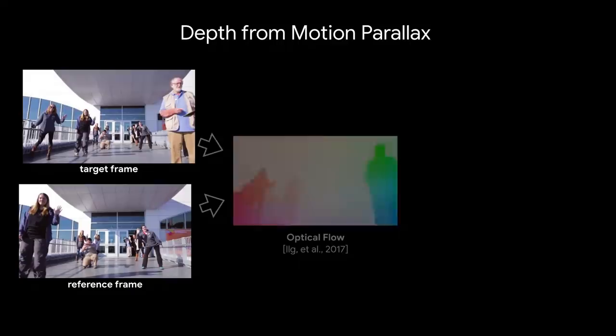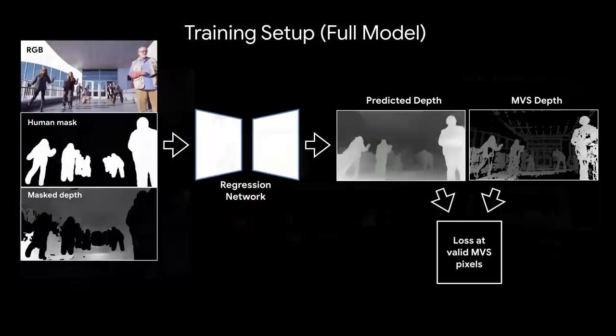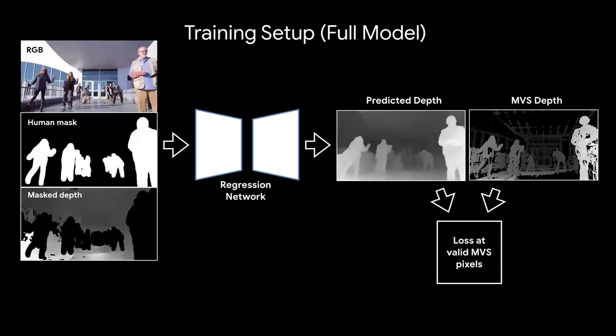The input to the network must handle both cases. The additional input is depth computed from motion parallax. We compute optical flow between the target and a reference frame, then translate the flow into depth using the SfM camera poses. At inference, the depth computed from moving people is inaccurate, so we remove humans using a segmentation mask. The full model takes as input the RGB frame, the human segmentation mask, and the masked depth from parallax.